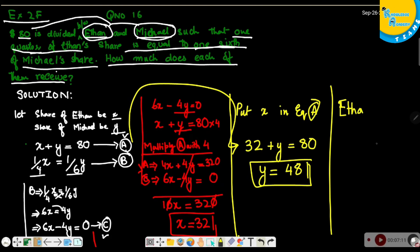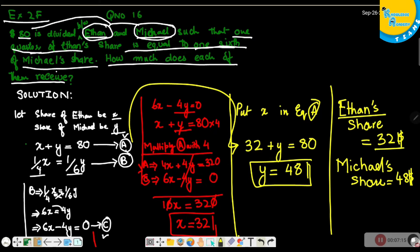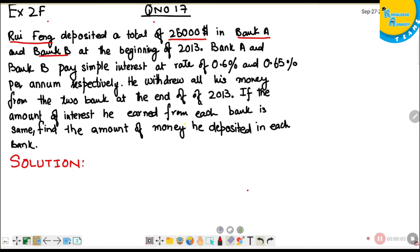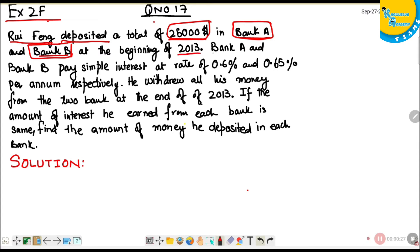So Ethan's share is $32 and Michael's share is $48. Moving on to question number 17, exercise 2f, intermediate level: Roofi deposited a total of $25,000 in Bank A and Bank B at the beginning of the year 2013. Bank A and Bank B pay simple interest of 0.6% and 0.65% per annum. He withdrew all his money from both banks at the end of the year.